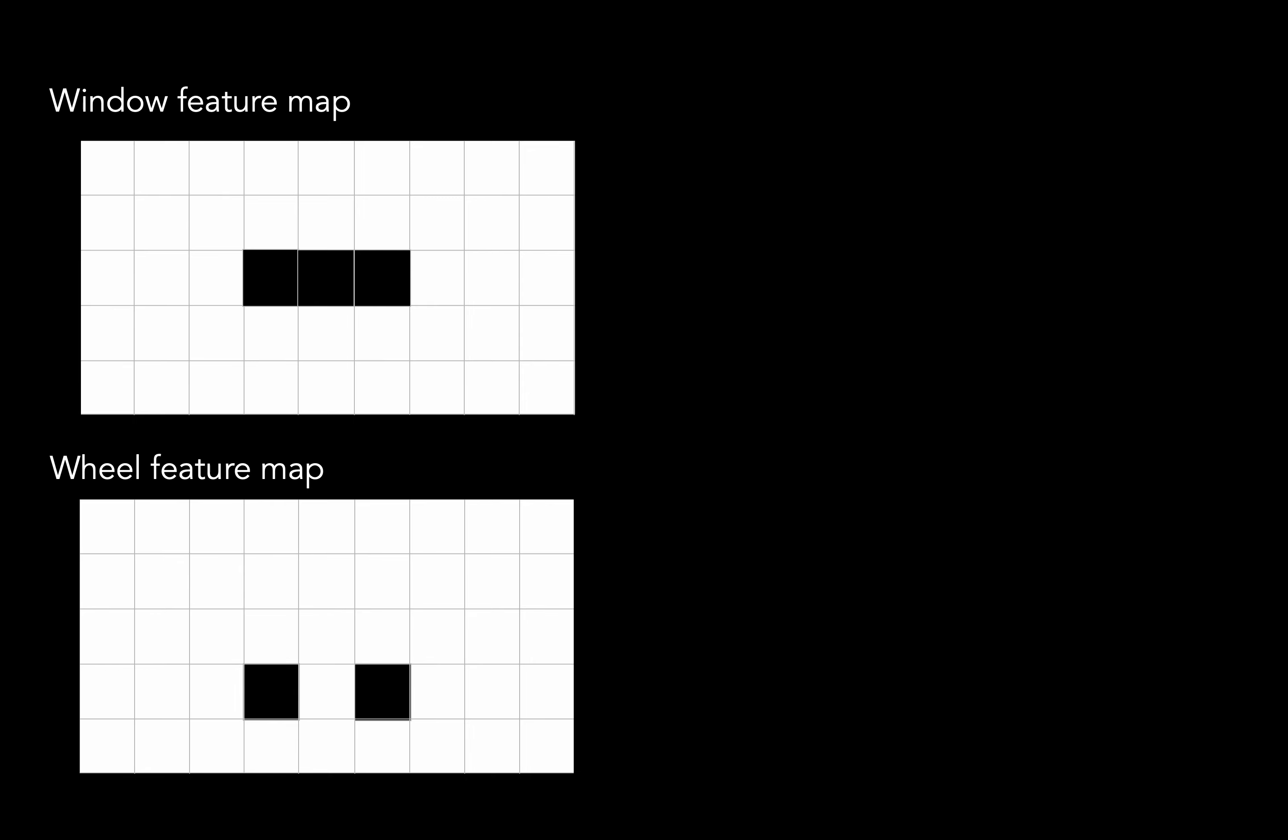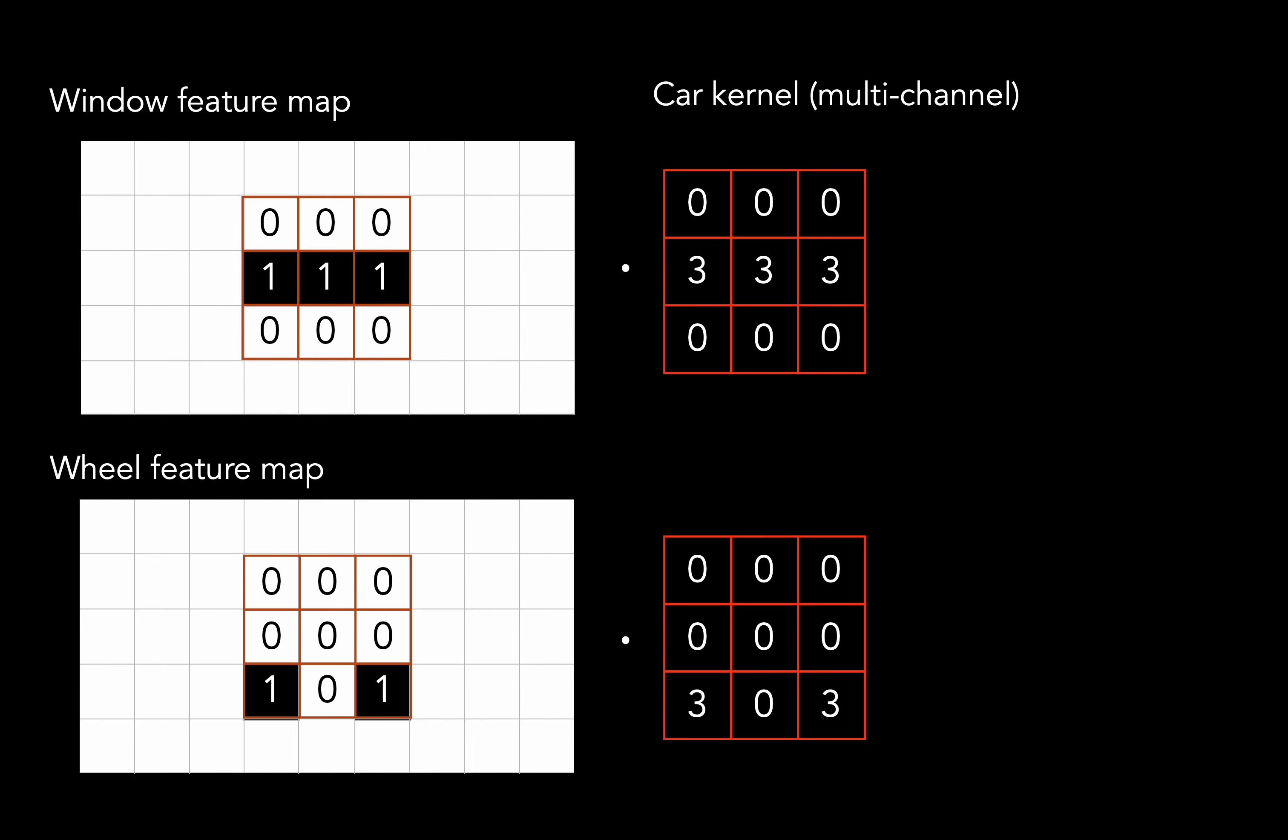Now another key thing to mention is that the kernel used to create some output feature map can operate on multiple input feature maps. So for example, let's say we have a feature map for windows and one for wheels. Now we may design a multi-channel car kernel that straddles both these feature maps such that we require the presence of both windows and wheels in the right positions to get a detection of a car. Right, so now we've addressed the spatial issue and we've seen how to integrate multiple feature maps to form higher order features, but we still haven't solved the problem of designing kernels for arbitrary objects.